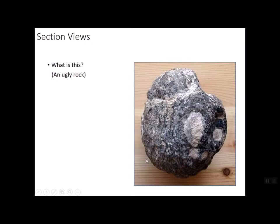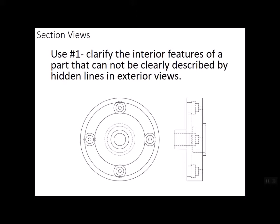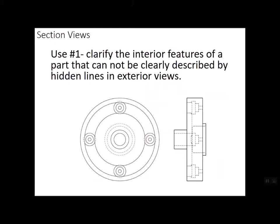So what you get is an interior view, and sometimes we find some surprising stuff in there. So the number one use of section views is to clarify the interior features that would be hard to tell, hard to distinguish, by looking at just hidden lines. The number one use of section views is to clarify things that might be confusing otherwise with hidden lines, as far as interior features or interior structure goes.